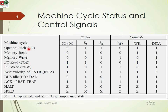For the Opcode Fetch machine cycle, S0 and S1 values are both 1. That is for the opcode fetch. For the Memory Read operation, S1 is 1 and S0 is 0. The IO/M bar memory pin is 0. The status pins are S1=1, S0=0, and the Read signal is active low (0).